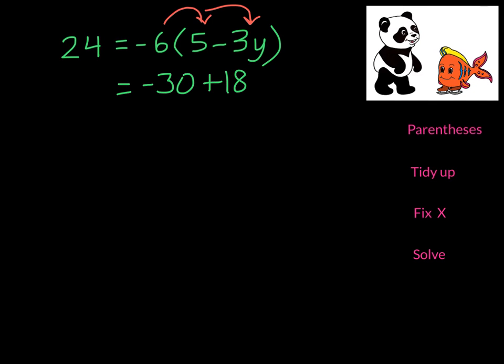On the left-hand side we have 24, so we've gotten rid of the parentheses. As far as tidy up, we have 24, negative 30, and 18y — so that's tidy, we don't have to simplify, and we don't need to fix x because there's only one variable here.